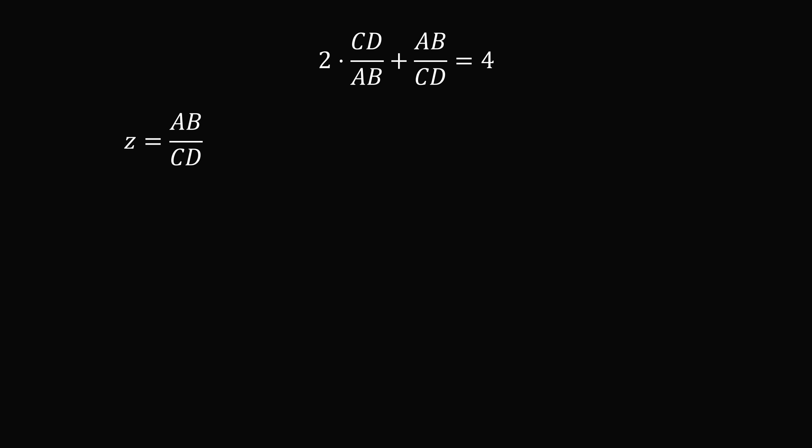Let z be equal to AB over CD. Then CD over AB is equal to 1 over z. So we have 2 multiplied by 1 over z plus z is equal to 4. Multiply the entire equation by z and then subtract 4z from both sides.